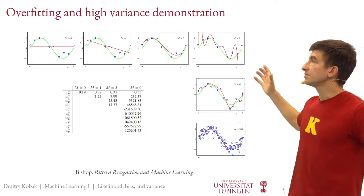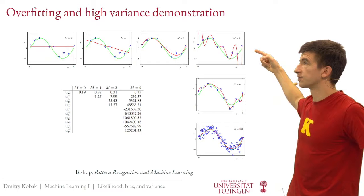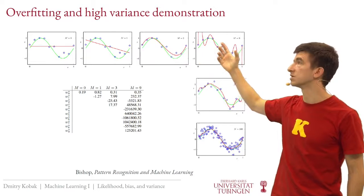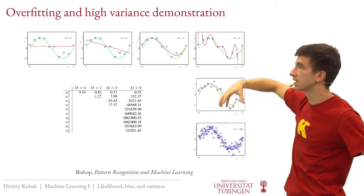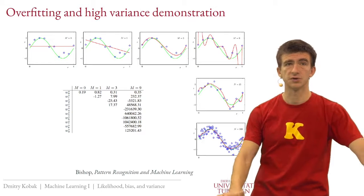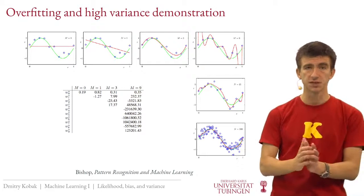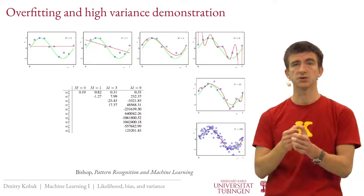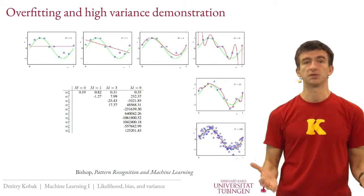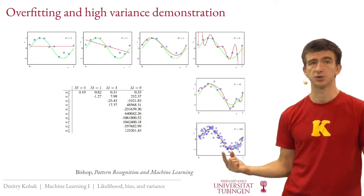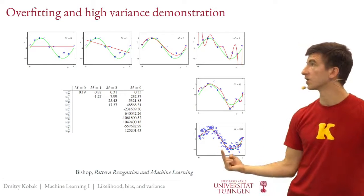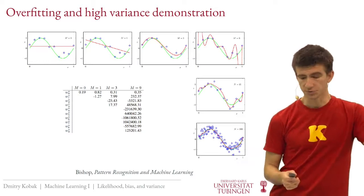Importantly, this overfitting occurs for a fixed small sample size. If instead you fix a ninth-degree polynomial but increase the sample size dramatically, the prediction becomes close to the true green line — you're no longer overfitting. Overfitting only happens if your model is too flexible relative to the amount of data. With a large sample, the same ninth-degree polynomial is fine. To overfit a large dataset, you might need a hundredth-degree polynomial or higher.